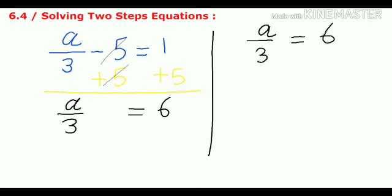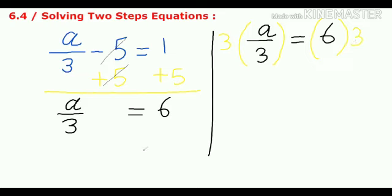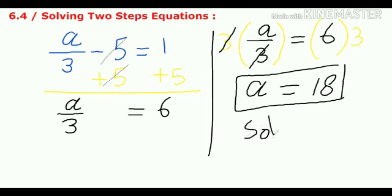Now we need to remove the 3 from a over 3. Since it is a division, to remove the divide we need to multiply. We multiply both sides by 3 — the 3 cancels on the left, leaving a equal to 6 times 3, which is 18. This is the solution of our equation.